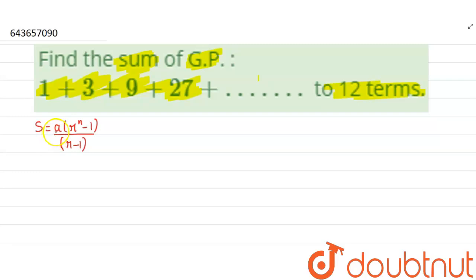So what is a? A is the first term, r is the common ratio, and n is the number of terms. Here you can see that the number of terms is 12. So clearly we can write n equal to 12.